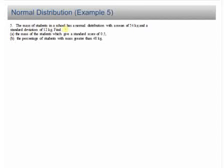The mass of students in the school has a normal distribution with mean 54 kg and standard deviation 12 kg. So you have the mass of the student, X, which is normally distributed: the mean is 54 kg and the standard deviation is 12, so you put 12 squared.